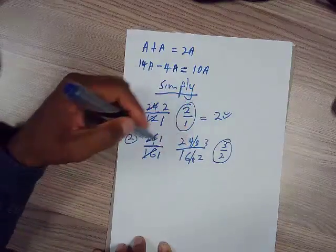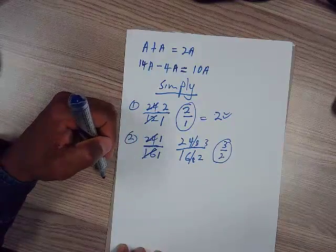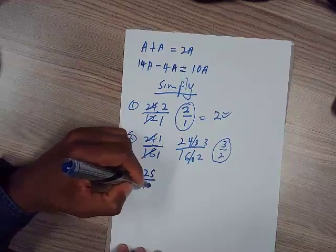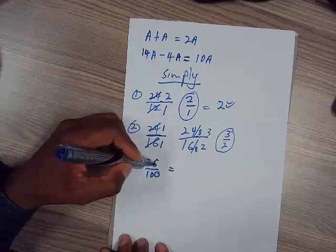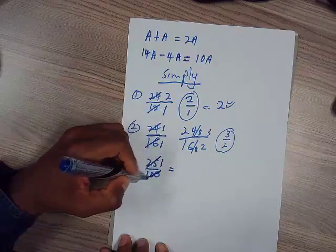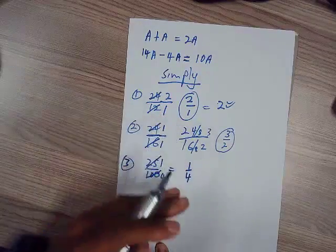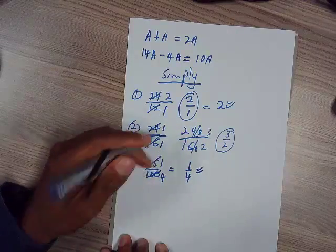What about 25 over 100? This one is pretty simple: 25 goes into 25 once, and into 100 four times. Now you have 1 over 4. It is much easier for you to deal with this than deal with that. So basically, they are similar—it's just the way it is. You simplify numbers within equations to make your life easy.